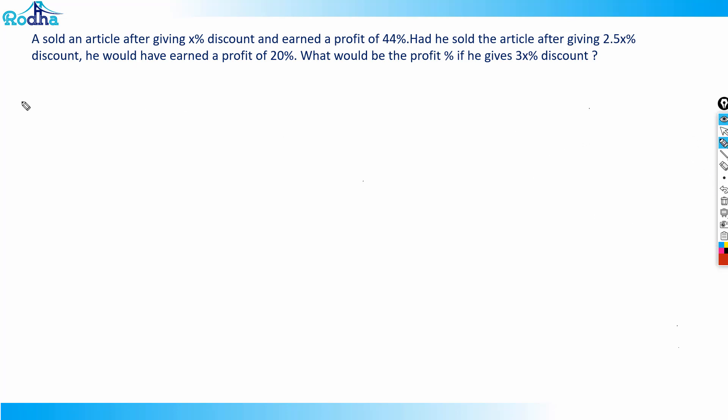Let's look at this question. A shopkeeper sold an article after giving x percent discount and earned a profit of 44 percent. Had he sold the article after giving 2.5x percent discount, he would have earned a profit of 20 percent. What would be the profit percentage if he gives 3x percent discount? In the first go, this question may not look that difficult.